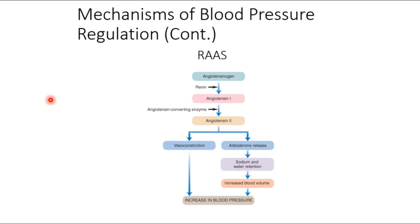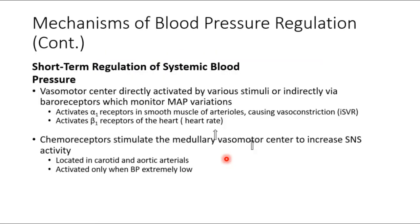ACE sits between angiotensin 1 and angiotensin 2 in the RAAS pathway. An ACE inhibitor blocks that enzyme's activity, so you no longer produce angiotensin 2, and the rest of the pathway doesn't happen. You won't retain as much water, won't be thirsty, won't vasoconstrict — your blood pressure will be lower.